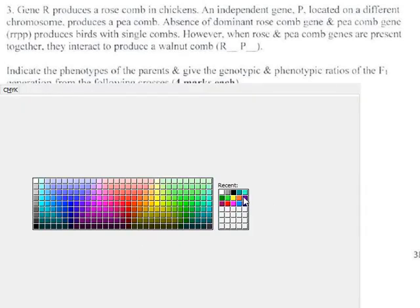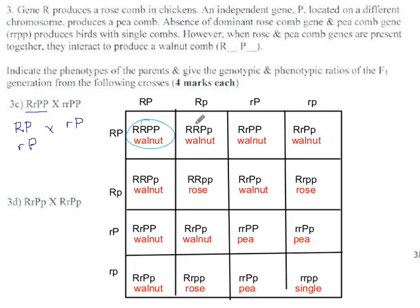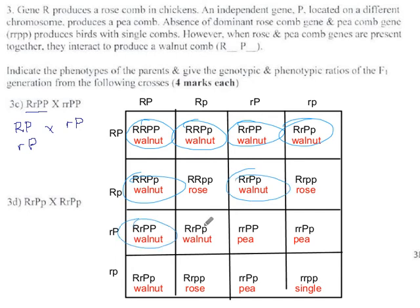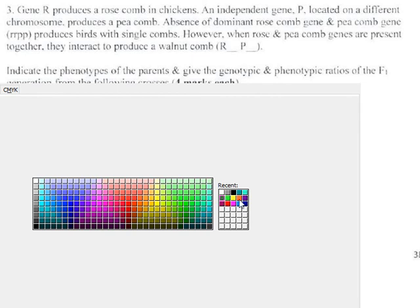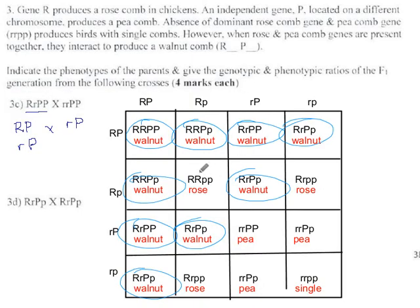So if we count, 1 walnut, 2 walnut, 3, 4, 5, 6, 7, 8, 9 walnut. Rose we get 1, 2, 3, 1, 2, 3, and single we get 1. So the 9, 3, 3, 1 worked here because neither of these traits overrides or negates the other one.